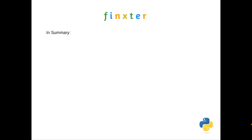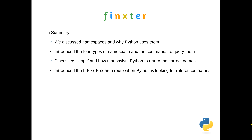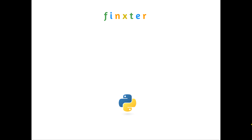To summarize: we discussed namespaces and why Python uses them, and introduced the four types of namespace and the commands to query those. We discussed scope and how that assists Python to return the correct names. We introduced the LEGB search route when Python is looking for referenced names, and showed all of that in code. Namespaces are simply a filing system to enable names and values to be stored by Python, and a search route that allows them to be found. Thank you very much for listening.